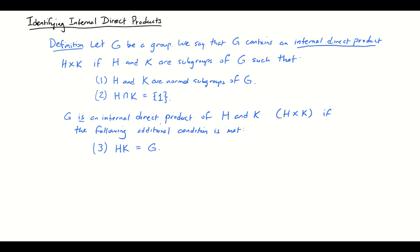But sometimes you'll see H and K inside of G and you'll see an internal direct product of H and K inside of G, and G will contain some other stuff that's not accounted for here. So I want to leave that possibility open. This is a little bit more elaborate definition than what's given in the book because it allows for the possibility that G might not be the internal direct product of H and K, but it might contain an internal direct product.